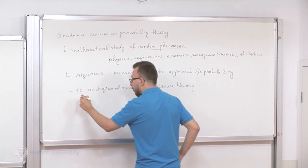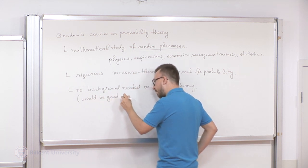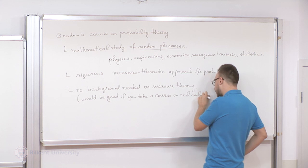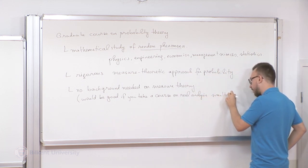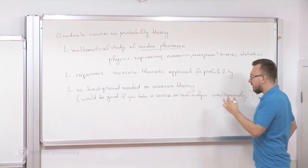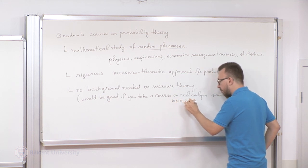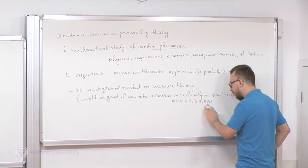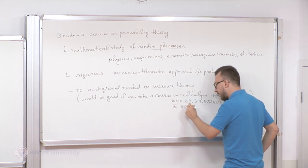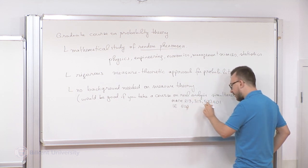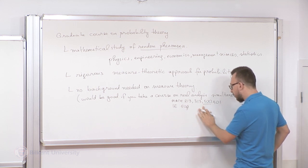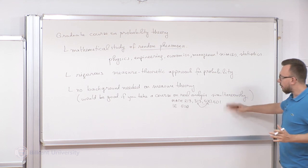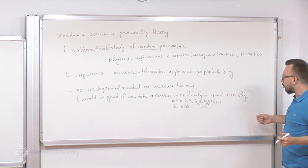It would be good if you take a course on real analysis simultaneously — for instance Math 203, 313, or 501, or IE 500/501. If you take one of those courses at the same time, this would help you get used to proofs. There are going to be a lot of proofs and also a lot of calculations.